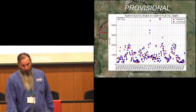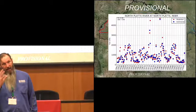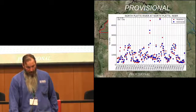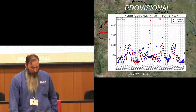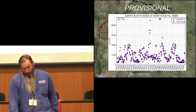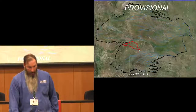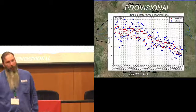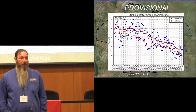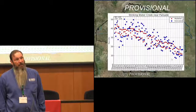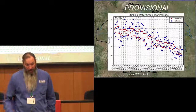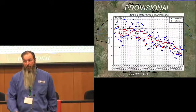The North Platte River at North Platte has a variety of other flows mixed in, but you see the model reproducing the trends through the record. And Stinking Water Creek near Palisade — one of the Republican tributaries — shows a trend from around 40 CFS estimated and simulated stream base flow, declining to around 10 to 20 CFS stream base flow.